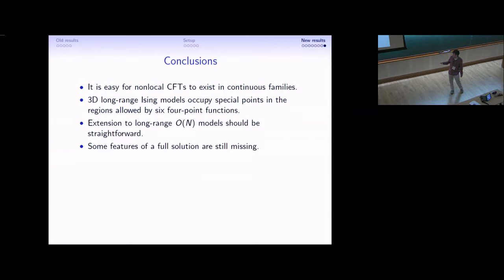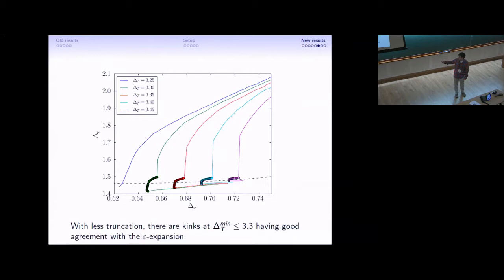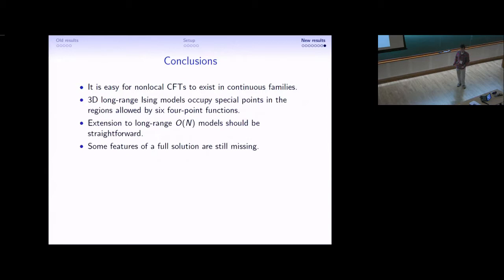Now, this plot appeared to have some shortcomings. In particular, the kink did not survive at a gap of 3.25. So, it's really only half of the non-trivial region where we found an estimate for the long-range Ising critical exponents. Also, in addition to finding more kinks, we would probably like to find islands, as has been done for the short-range Ising model and the O(N) vector models.